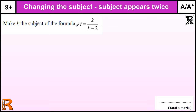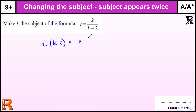Whenever we have anything with fractions, it's often a good idea to multiply by the bottom of the fraction to move it to the top. So let's start with that. Multiplying both sides by K minus 2, I get K minus 2 all over K minus 2. The reason I do that is because these two cancel to just leave me with the K on the top.